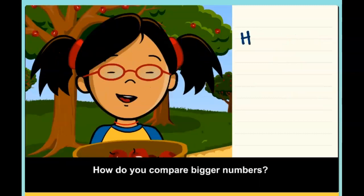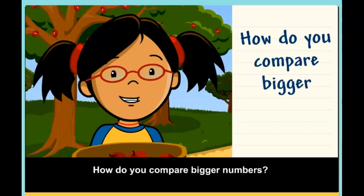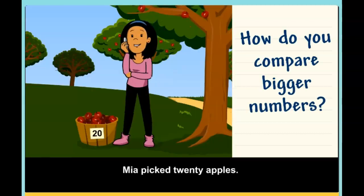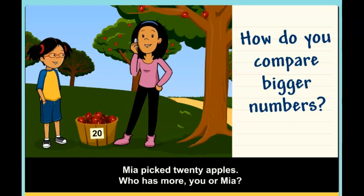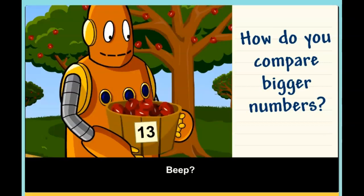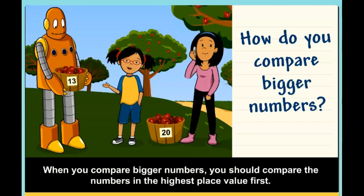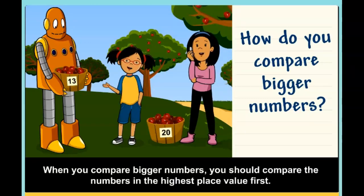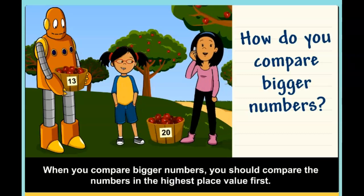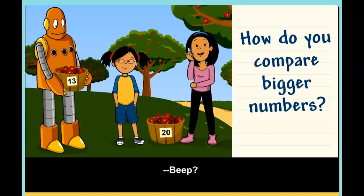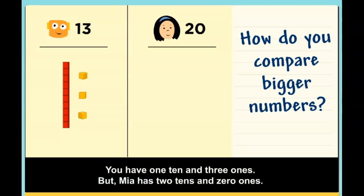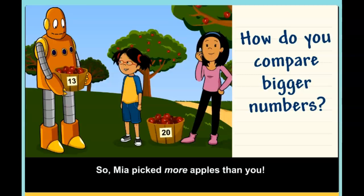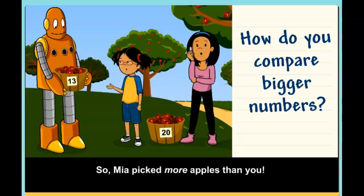How do you compare bigger numbers? Mia picked 20 apples. Who has more, you or Mia? When you compare bigger numbers, you should compare the numbers in the highest place value first. You have one ten and three ones. But Mia has two tens and zero ones. So Mia picked more apples than you.